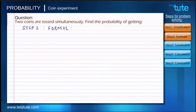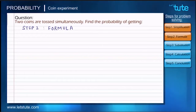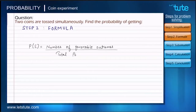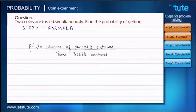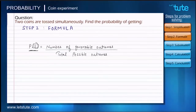Step 2 is going to be the choosing of a formula. We have already learned that the formula to find the probability of any event involves the ratio between the number of favorable outcomes of an event to the total possible outcomes. We denote the probability of any event as P(E), where E is the event we are considering.